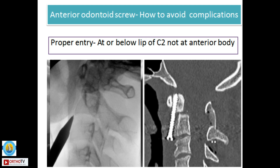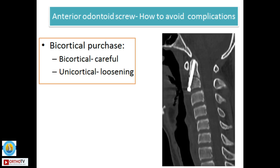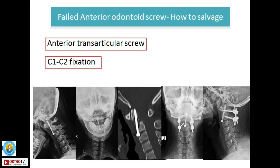To avoid complications, be sure you get a proper entry point. If the patient is elderly and osteoporotic, it is better to be under the inferior lip rather than at the junction. It is better to have a bicortical purchase, but for that you need a screw of adequate length; otherwise loosening is possible. The screws also should not be over-tightened. If there is a failure of the odontoid screw because of inadequate fixation, the best thing is to not do anything more with the screw, but go ahead and perform a posterior C1-C2 fixation.